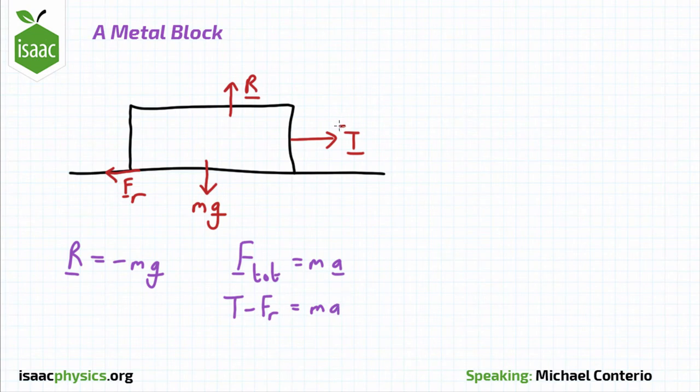Then we change the tension in the string to 5T over 4, and we can basically rewrite F equals ma with this now. So we get 5T over 4 minus F_r equals m times the new acceleration a_n, and then we can just rearrange our previous equation to work out what F_r is and remove that from the equations.